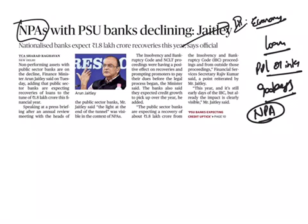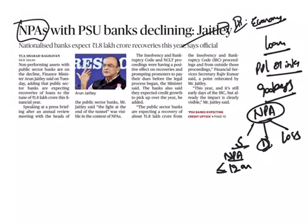Non-performing assets are classified by banks into three types: standard NPA, doubtful NPA, and loss assets. Standard assets remain as NPA for a period of less than or equal to 12 months. Doubtful assets are classified as doubtful if they remain in the substandard category for a period of 12 months. According to RBI, a loss asset is uncollectable and of very little value to continue as a bankable asset, though there might be some returns.